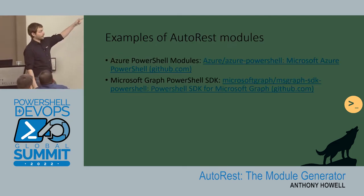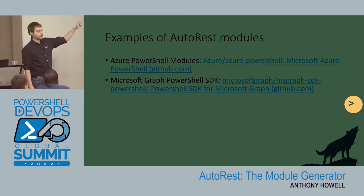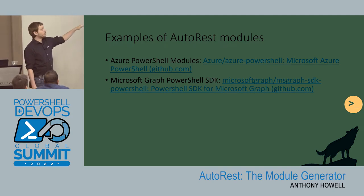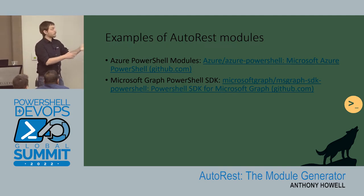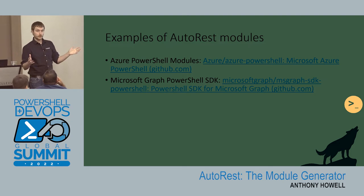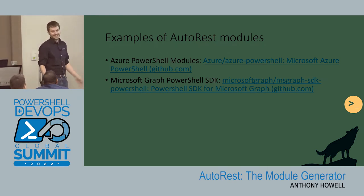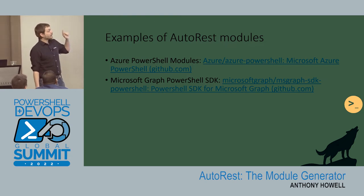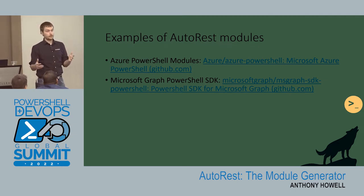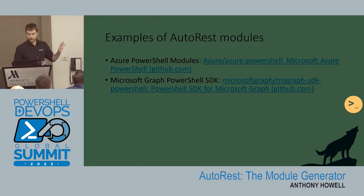And examples: you guys have all heard of Azure, right? The AZ modules — those are AutoRest modules. Graph modules are all AutoRest modules. This is really important because Microsoft develops AutoRest, Microsoft develops these APIs, Microsoft develops these SDKs. So it's a fully supported tool by Microsoft. If you guys run into problems or want to see how Microsoft does it, those are the modules to look at. I have spent a lot of time looking through the Graph SDK — they do some really fancy stuff with directives, and we'll get into what directives are.